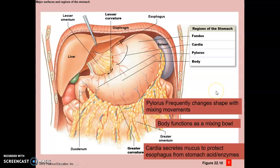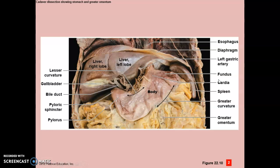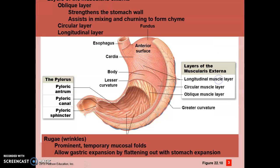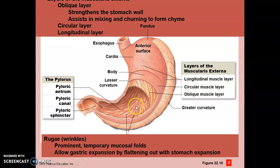The pylorus frequently changes shape with mixing movements because the stomach functions as a mixing bowl. The cardiac region secretes mucus to protect the esophagus from stomach acid. There are three layers of muscle around the stomach: the oblique layer is the inner layer, the circular is the middle layer, and the longitudinal is the outer layer. Inside the stomach are permanent mucosal folds called rugae, which flatten out as the stomach distends and fills with food.